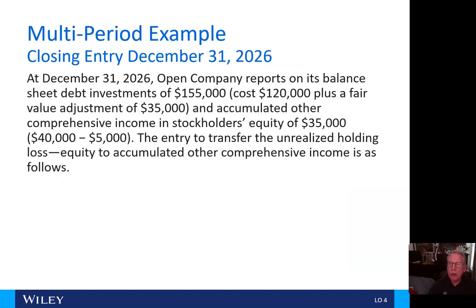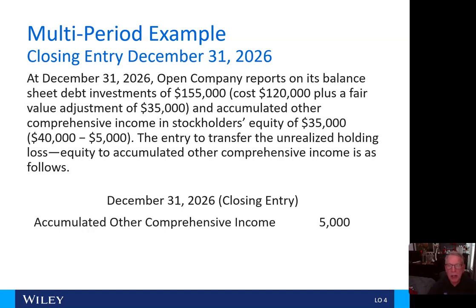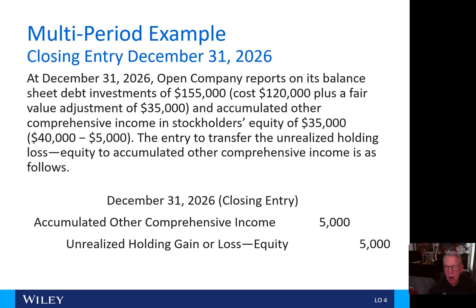At December 31, 2026, Open Company reports on its balance sheet debt investments of $155,000 — the cost of $120,000 plus the fair value adjustment of $35,000 — and accumulated other comprehensive income in stockholders' equity of $35,000, representing the $40,000 less the $5,000. The closing entry is: debit accumulated other comprehensive income $5,000 and credit unrealized holding gain or loss — equity $5,000.